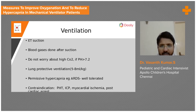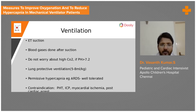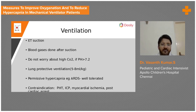In managing ventilation, always perform ET suction first. If you get a blood gas CO2 of around 70, ensure ET suction is done before drawing the blood gas — then wait 30 minutes before repeating the ABG. Blood gas should only be taken after ET suction, so you know the real carbon dioxide levels.